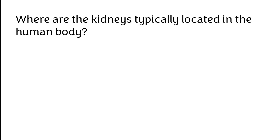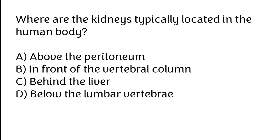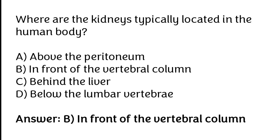Where are the kidneys typically located in the human body? Above the peritoneum, in front of the vertebral column, behind the liver, below the lumbar vertebrae. The correct answer is option B. Kidneys are typically located in front of the vertebral column.